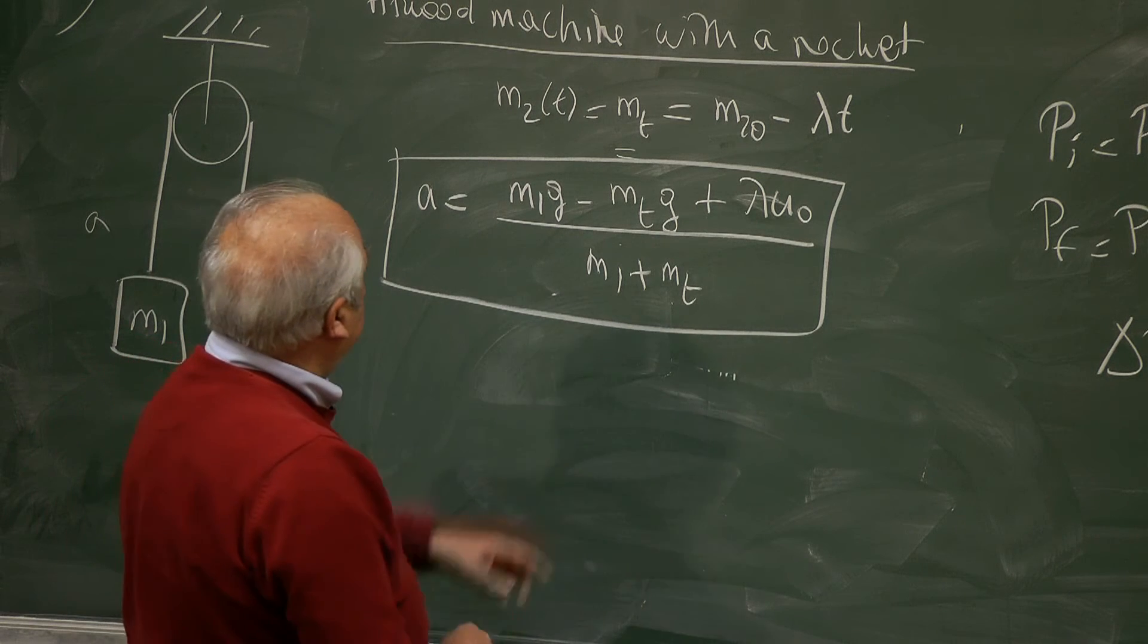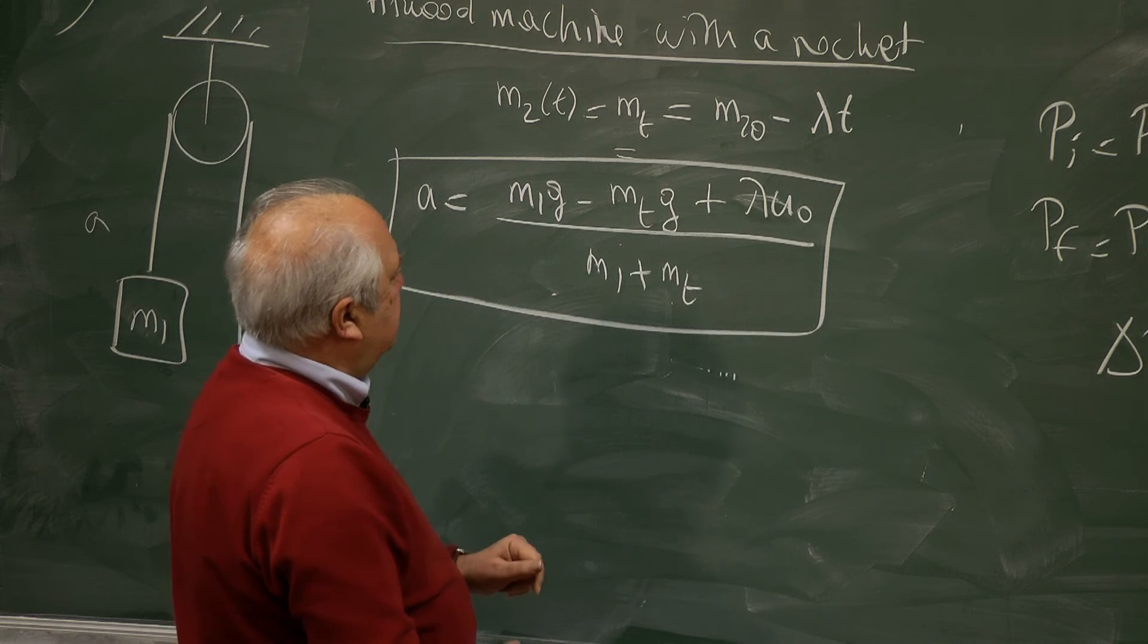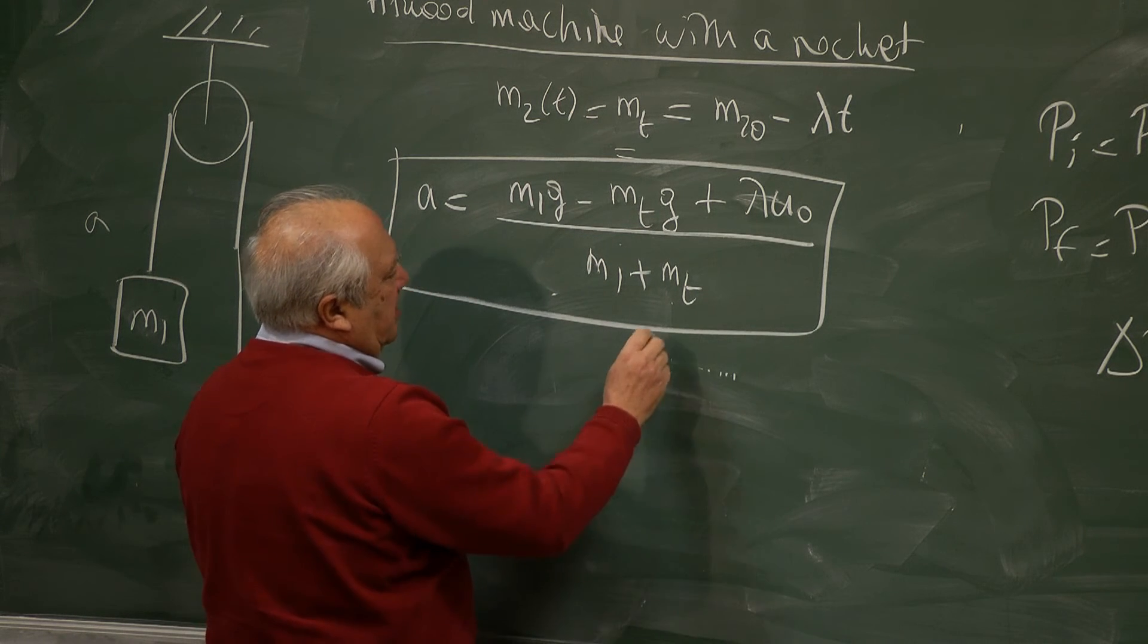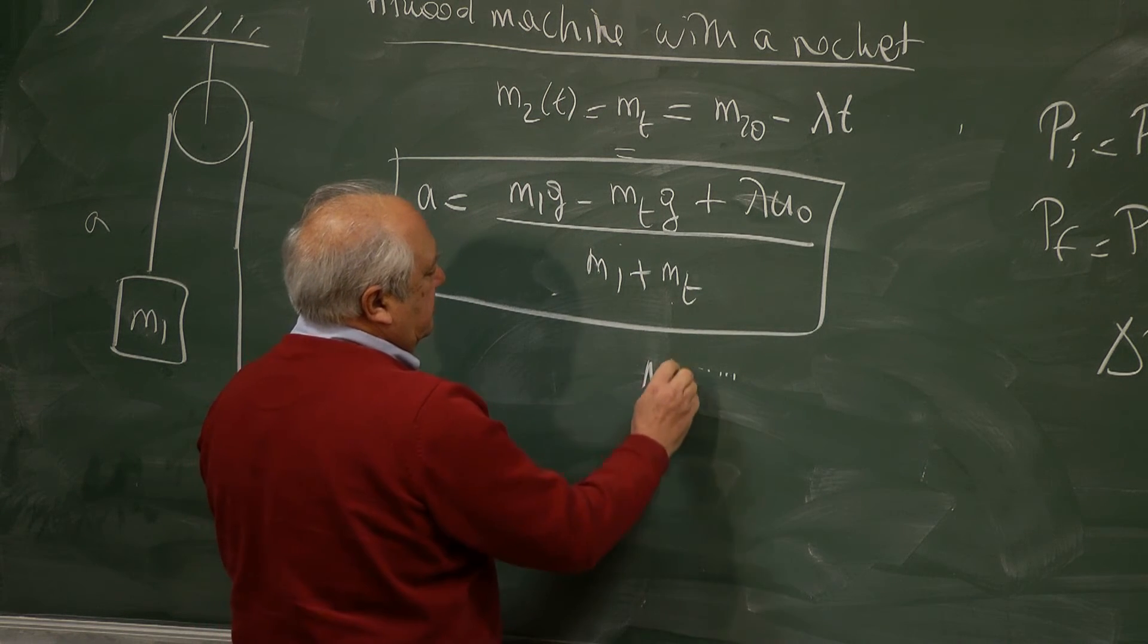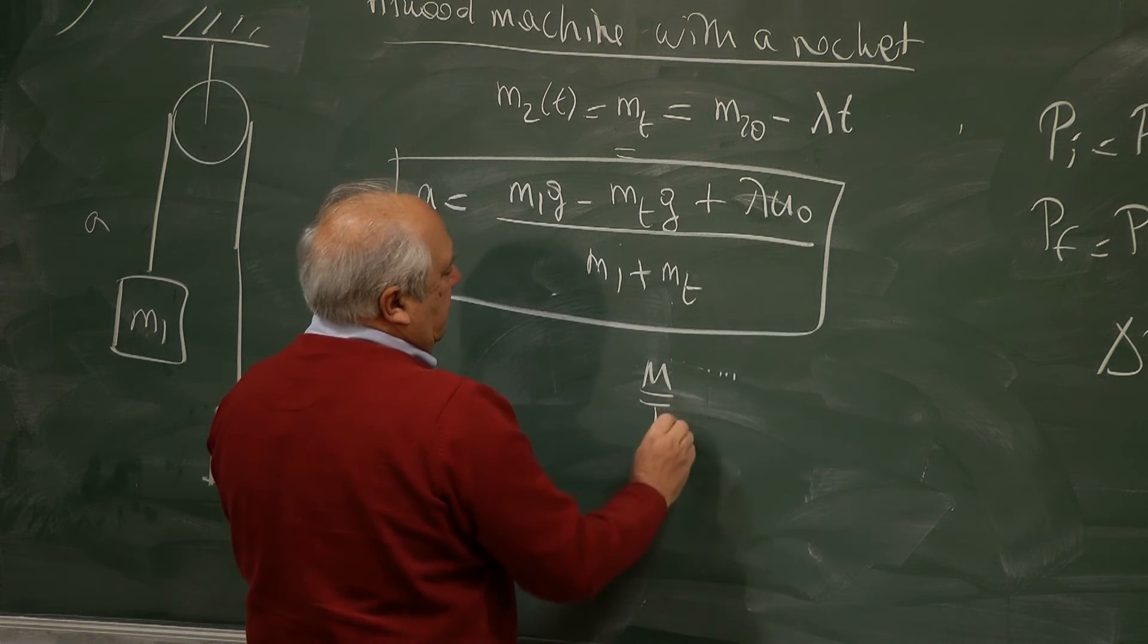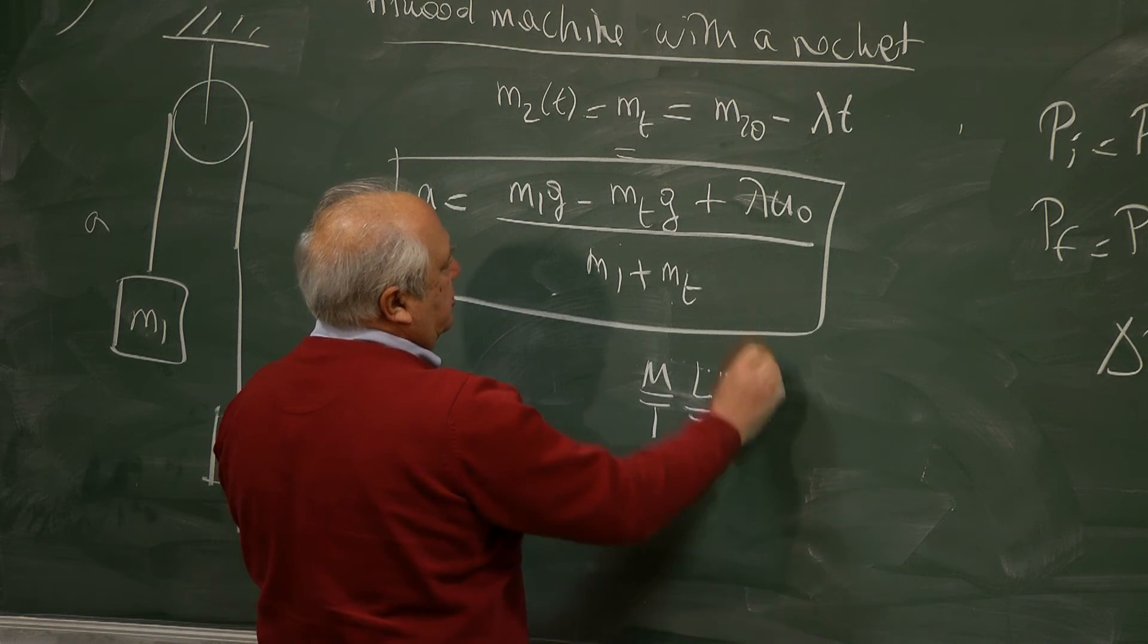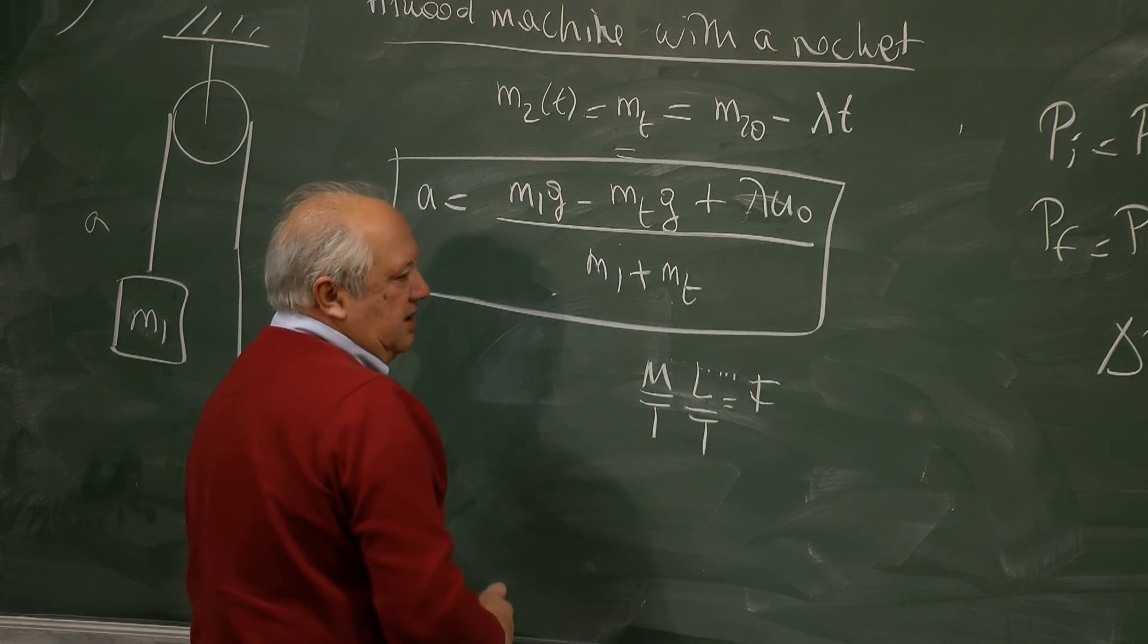Let's check the dimension. This is mass over mass. G, acceleration. Lambda is mass per unit time. U zero is velocity, L over T. So this is force. Force divided by mass is acceleration. So dimension check.